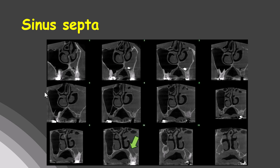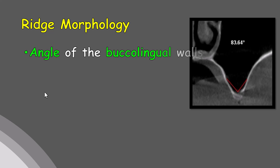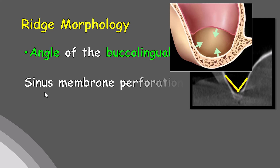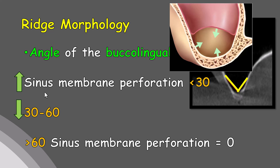CBCT is very helpful for visualizing the sinus and septa. Also important is the buccal-lingual angle of the maxillary sinus walls — the angle formed between the palatal and buccal walls. According to a 2001 study, the chance of membrane perforation is highest when this angle is less than 30 degrees, reduces when between 30 to 60 degrees, and is almost zero when the angle is larger than 60 degrees.